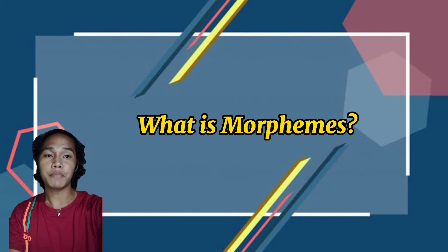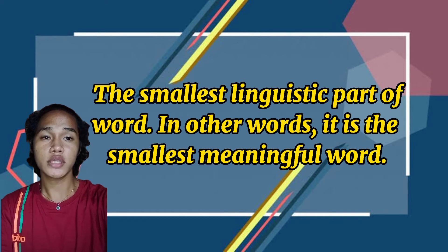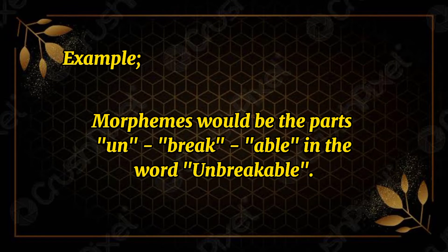What are morphemes? Morphemes are the smallest linguistic part of words. It is the smallest meaningful part of a word. For example, in the word 'unbreakable,' the morphemes would be the unbreakable parts — meaning the word 'unbreakable' has smaller meaningful units when we break it down.